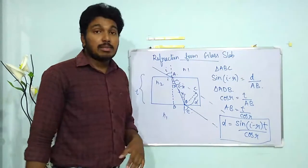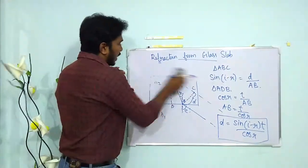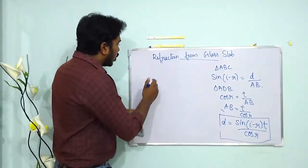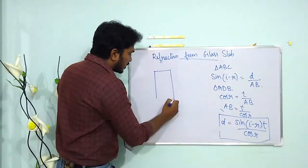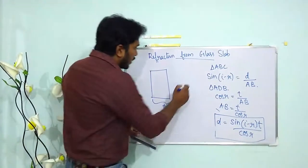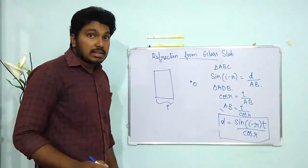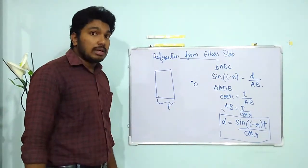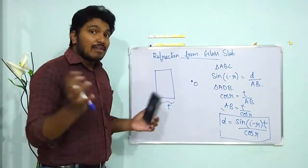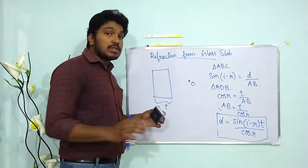Now let's move on to the normal shift that occurs in the case of a glass slab. Suppose I place my glass slab horizontally with thickness t, and an object is placed below it. A converging or diverging beam passing through the slab appears to be shifted from its actual point of convergence or divergence.